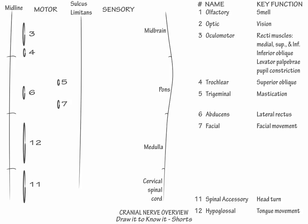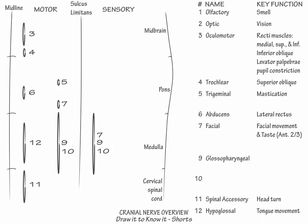Next, spanning the height of the medulla, draw the motor and sensory divisions of cranial nerves 9 and 10, and in the sensory division include cranial nerve 7, which provides taste from the anterior two-thirds of the tongue. Cranial nerve 9 is the glossopharyngeal nerve, involved in salivation, swallow, and cardiopulmonary function. Cranial nerve 10 is the vagus nerve, involved in gut motility, swallow, and cardiopulmonary function.